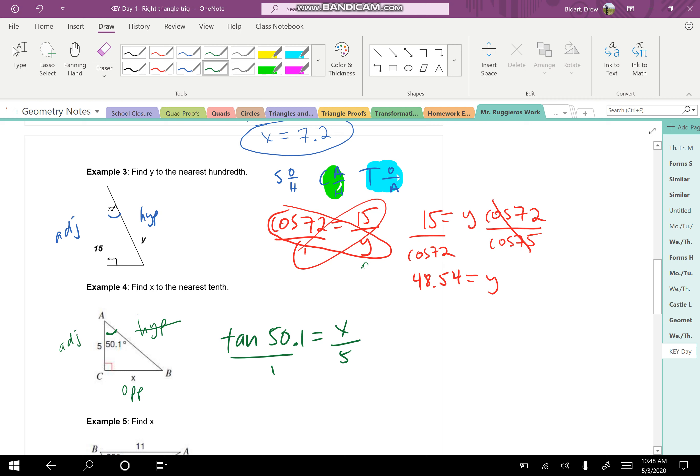In this example number four, the variable is in the numerator of the fraction. In example number three, it was in the denominator of the fraction. See the y right there? So it's always easier when the variable is in the numerator because when I cross multiply, it's x times 1 is x. And keep in mind, again, when I multiply 5 and the tan of 50.1.